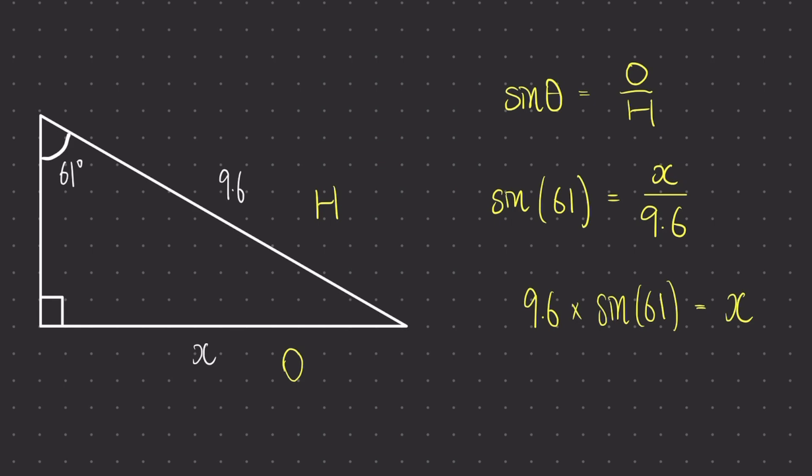The left hand side is something we can simply input into our calculator, and if we place that into our calculator we find that x is 8.40.